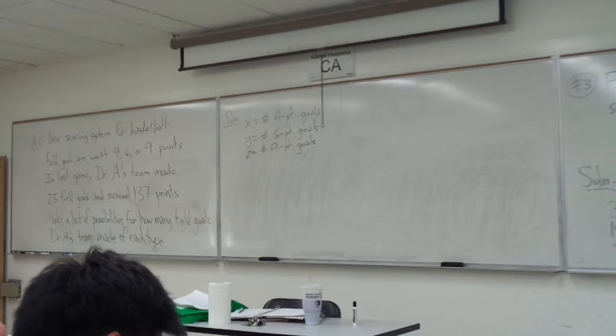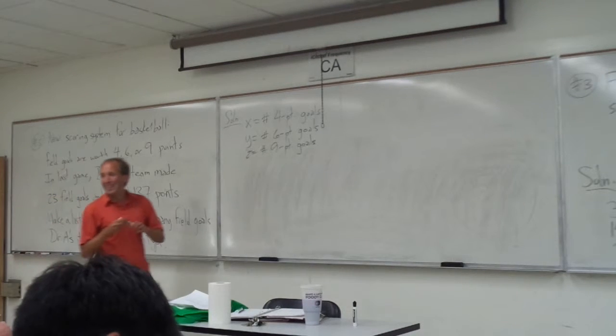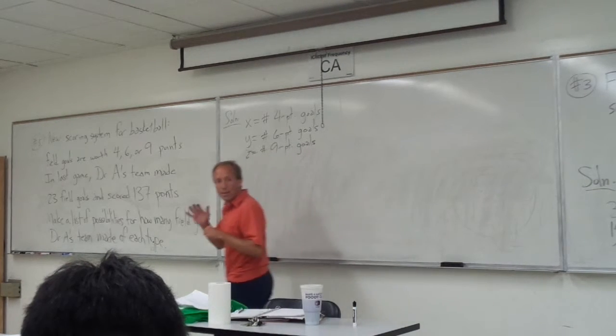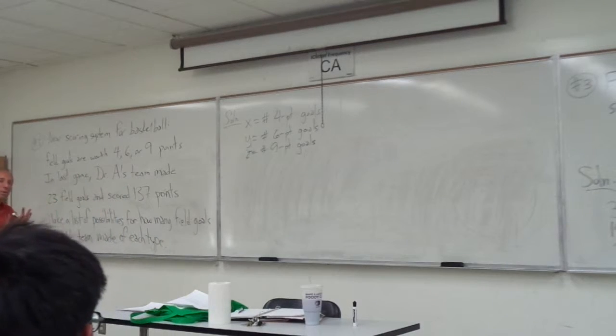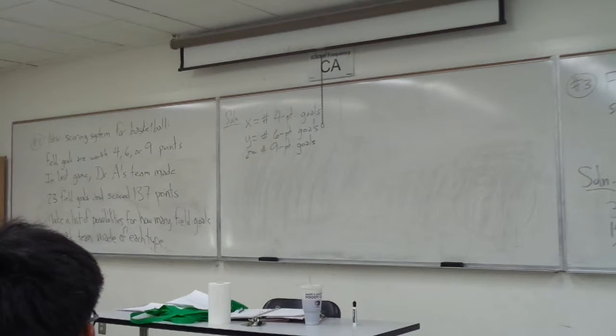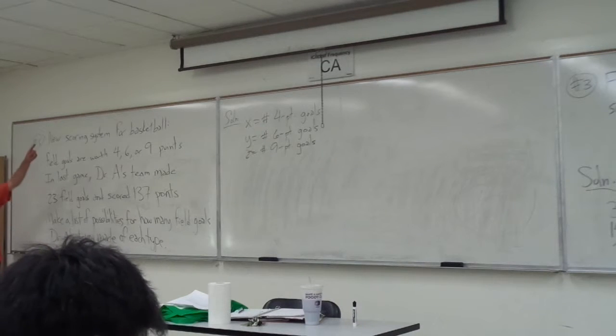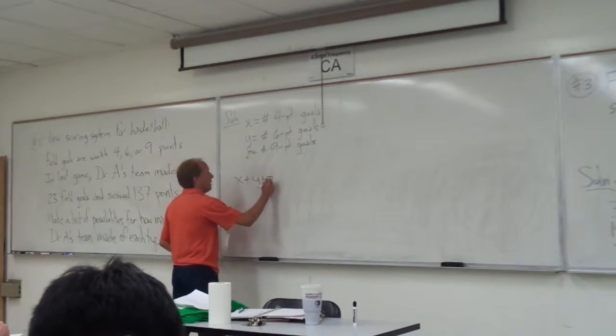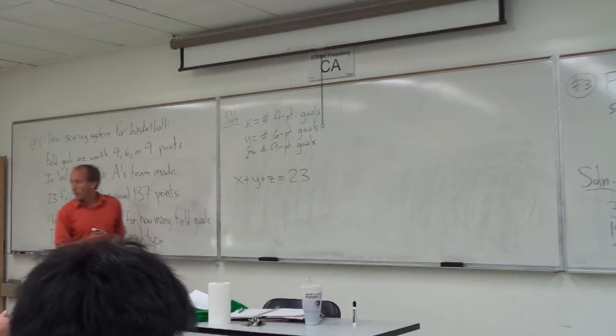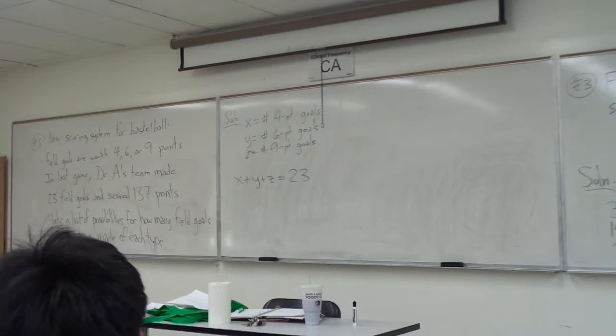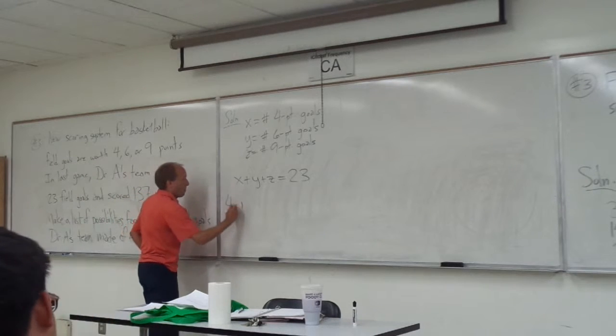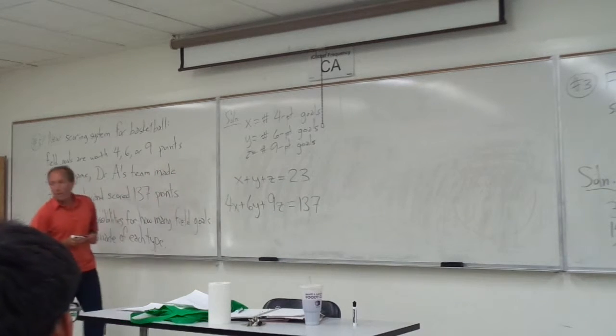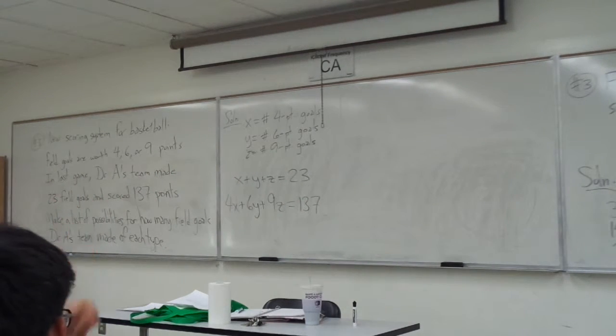So now Lisa's suggestion wants to set up some equations. So what kind of equations do you see here? Do you see an equation? One equation that we can use? X plus Y plus Z is equal to 23. X plus Y plus Z equals 23, so if we add up all the types, the total number of field goals is 23, right? So we'd have X plus Y plus Z is equal to 23, okay, looks good. And what else?